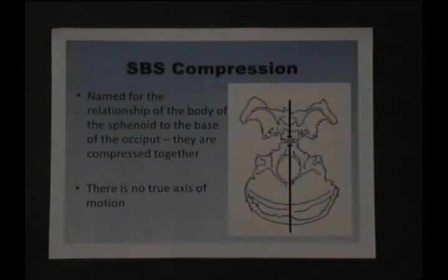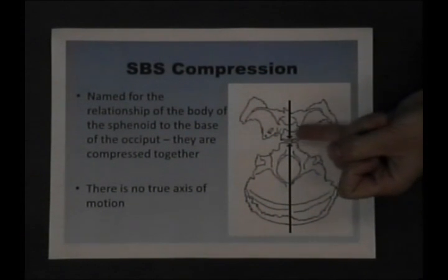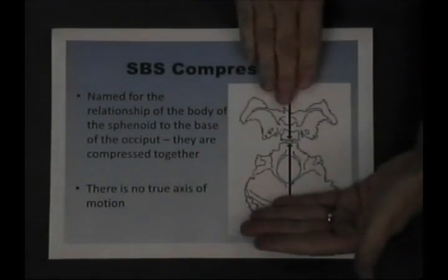In an SBS compression, we're looking at the base of the sphenoid and the base of the occiput. What has happened here from some sort of trauma, very often with car accidents, is there's a direct compression.